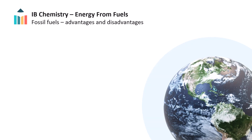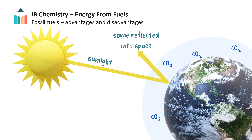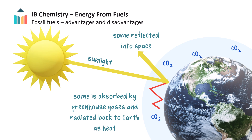Besides the harmful products formed from burning fossil fuels incompletely, complete combustion is also considered to have an impact on the environment. Carbon dioxide produced during complete combustion of fossil fuels adds to the carbon dioxide already in the atmosphere. Although some sunlight reaching Earth is reflected back into space, carbon dioxide absorbs some sunlight and radiates it back to Earth as heat through infrared radiation, and so carbon dioxide is referred to as a greenhouse gas.